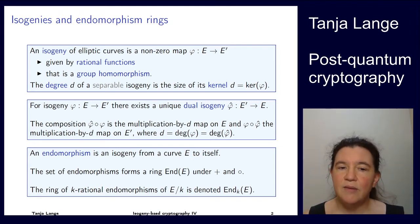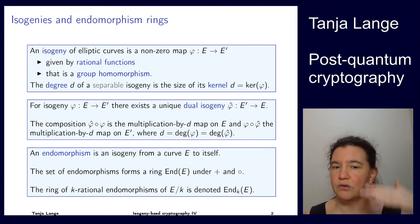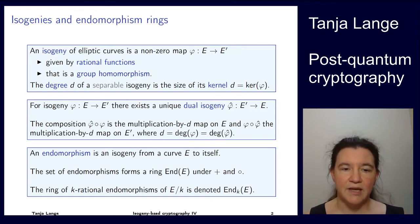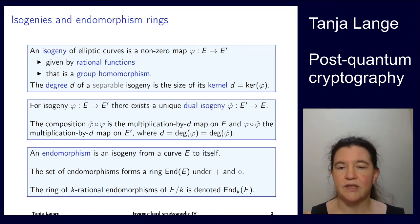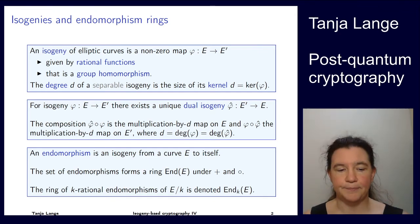This ring is called the endomorphism ring of the curve. Sometimes we highlight that this endomorphism ring only considers endomorphisms defined over a certain field k — then we're talking about the ring of k-rational endomorphisms, and End gets a subscript k.